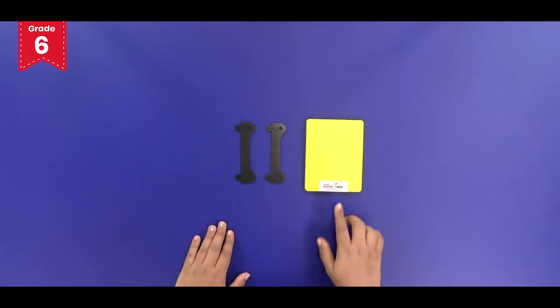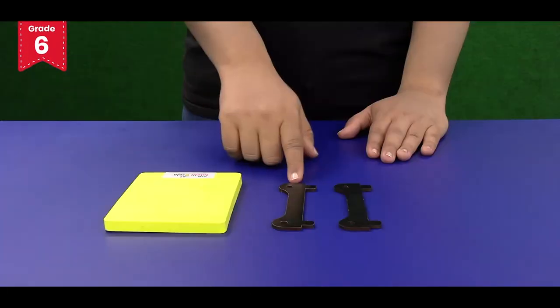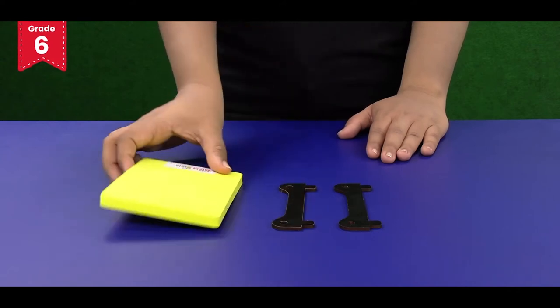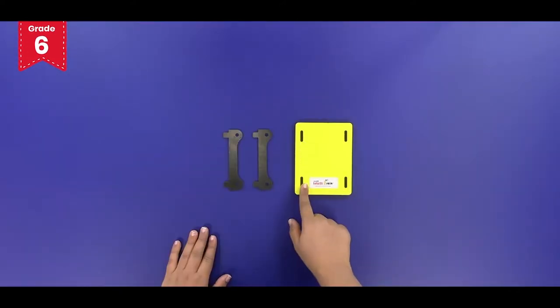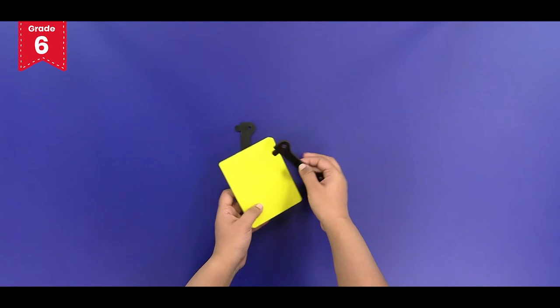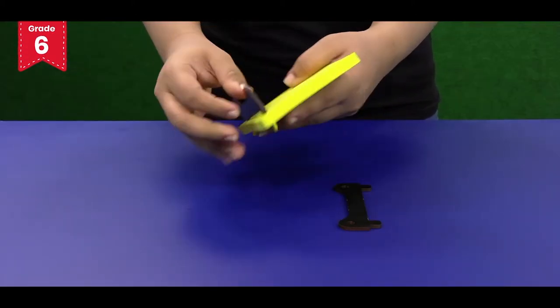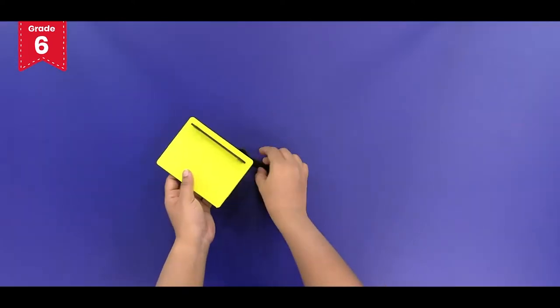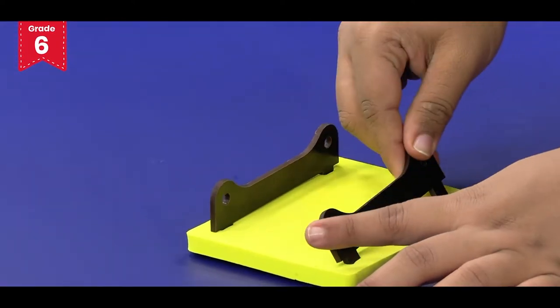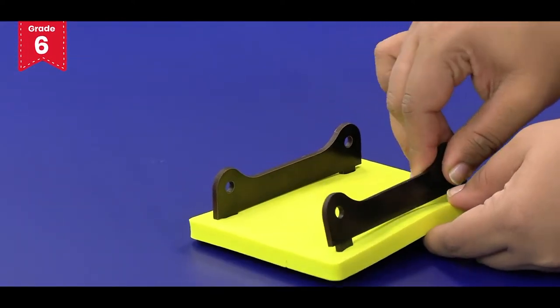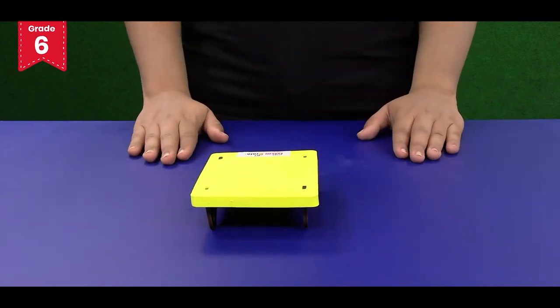First take the foam base and insert the axle holders into these slits. The base of the balloon car is now ready.